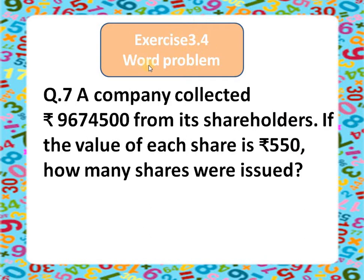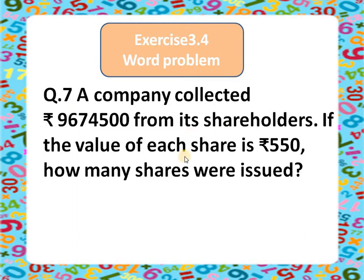This is exercise number 3.4, word problems. Question number 7: A company collected rupees 96 lakhs 74 thousand 500 from its shareholders. If the value of each share is rupees 550, how many shares were issued? The total amount collected is given, and each share has a value of rupees 550, so we need to find out how many shares were issued by the company.